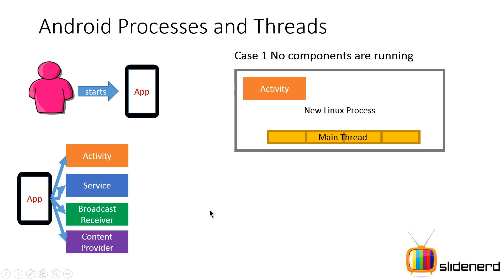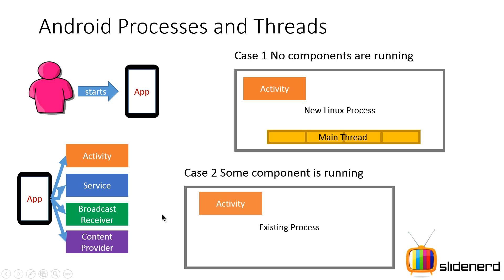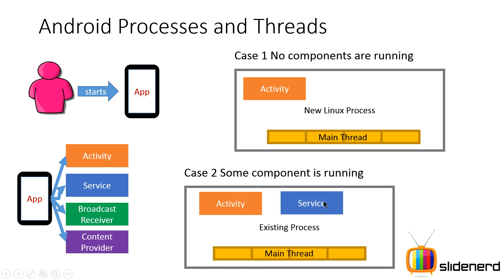However, if you start a service that belongs to the same app, and the activity was already running — meaning some component is already working — then the service is going to be put inside the same process as the activity and has access to the same main thread, with which it will perform all its tasks. This is the basic mechanism of how processes are started in Android.